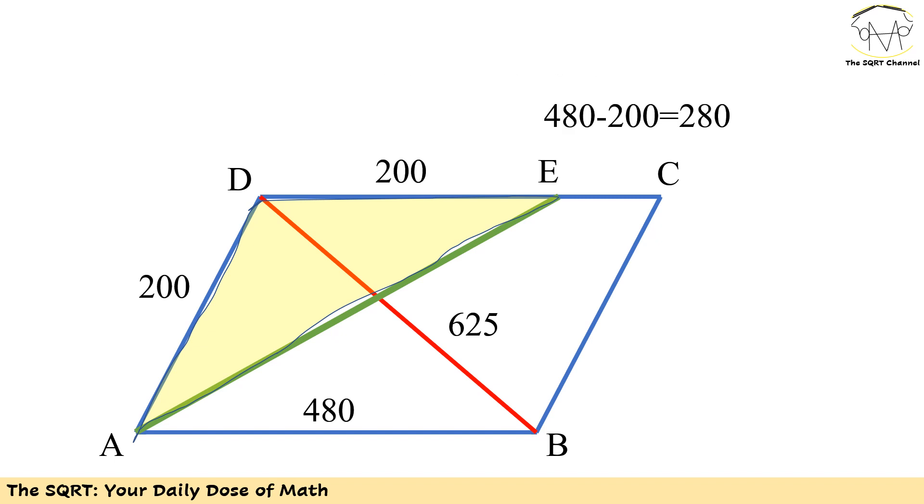So we can say that AD and DE are equal and we have 200 for those values. The rest is easy. DC is 480 and DE is 200. So EC is going to be 480 minus 200 or 280, and that's our answer.